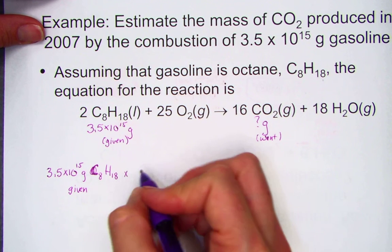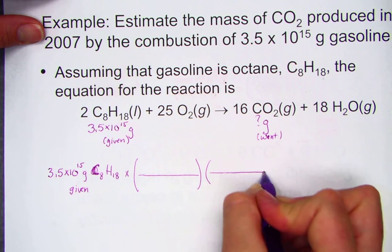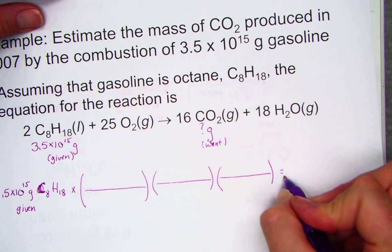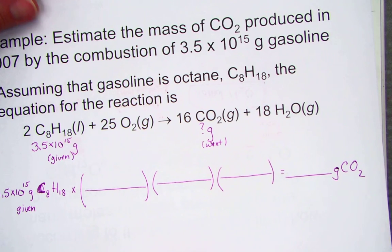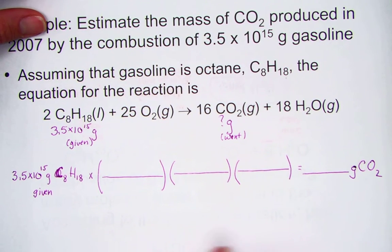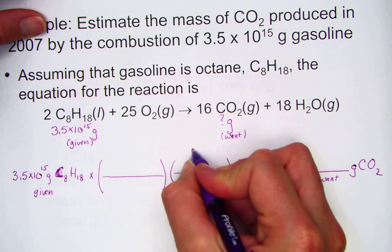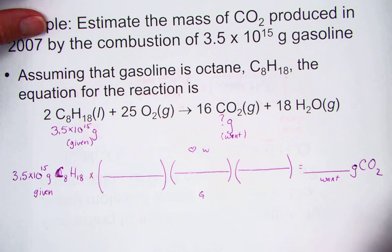We'll set up our three conversion factors. We know that it takes three steps to move all the way from the left to the right-hand side of our stoichiometry roadmap. Given a mass, we want to calculate a mass, going to grams of carbon dioxide. Moving from given to what we want, in the heart of our problem, the want over given stoichiometric ratio coming from our balanced coefficients.